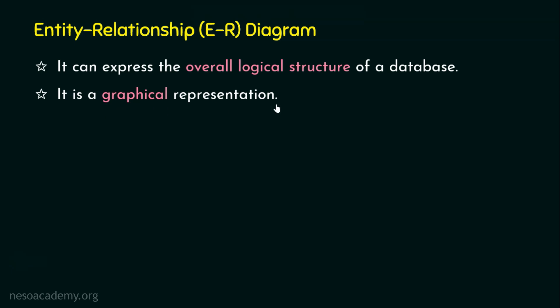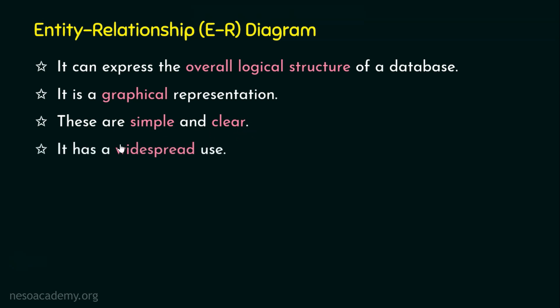A picture is worth a thousand words. It's easy to understand things with a picture, especially when it involves a lot of complexities. Instead of written or verbal communication, representing things with diagrams has more advantages — they are simple and clear. While looking at the diagram itself, we can understand how many tables there are, what the attributes are, how relationships are formed, which is a primary key attribute, and whether there is any weak relationship. Because of its simplicity and clarity, it has widespread usage in database deployment areas.